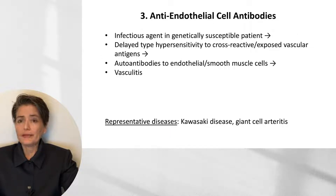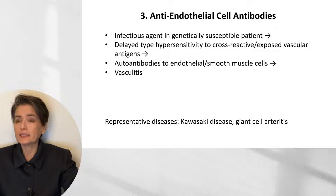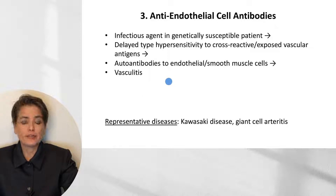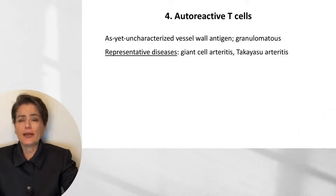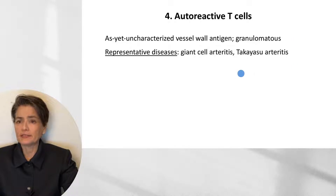The third mechanism is anti-endothelial cell antibodies. It is thought that an infectious agent in a genetically susceptible patient leads to delayed-type hypersensitivity to cross-reactive or exposed vascular antigens, resulting in the formation of autoantibodies to endothelial and smooth muscle cells that cause vasculitis. The two representative diseases here are Kawasaki disease and giant cell arteritis. Finally, autoreactive T-cells — through an as-yet-uncharacterized vessel wall antigen — typically produce granulomatous inflammation, with representative diseases being giant cell arteritis and Takayasu arteritis.